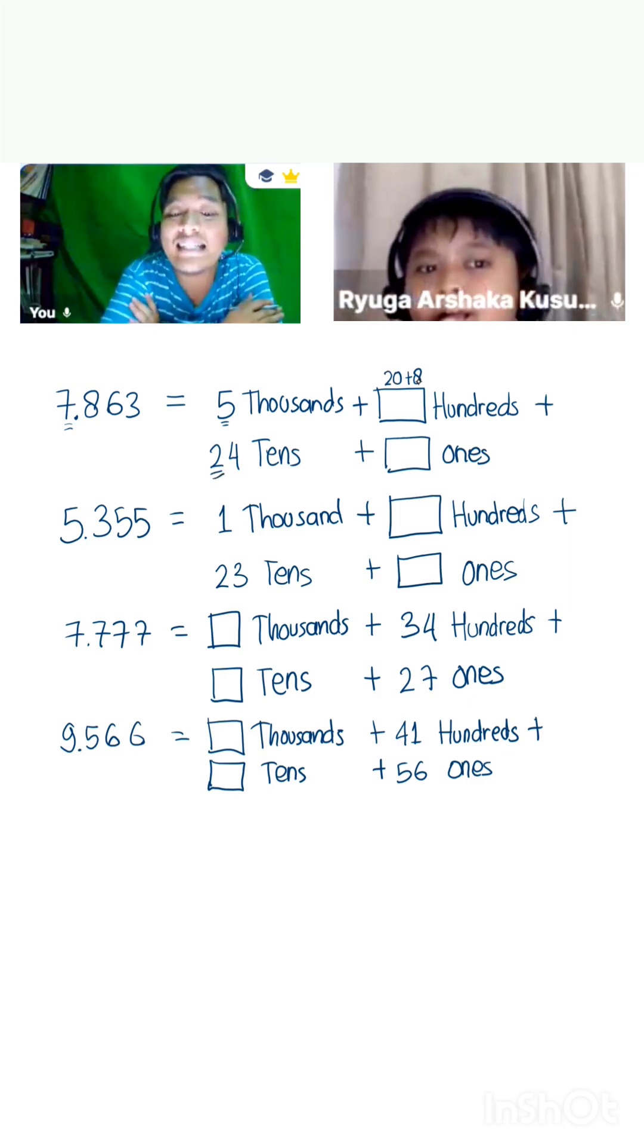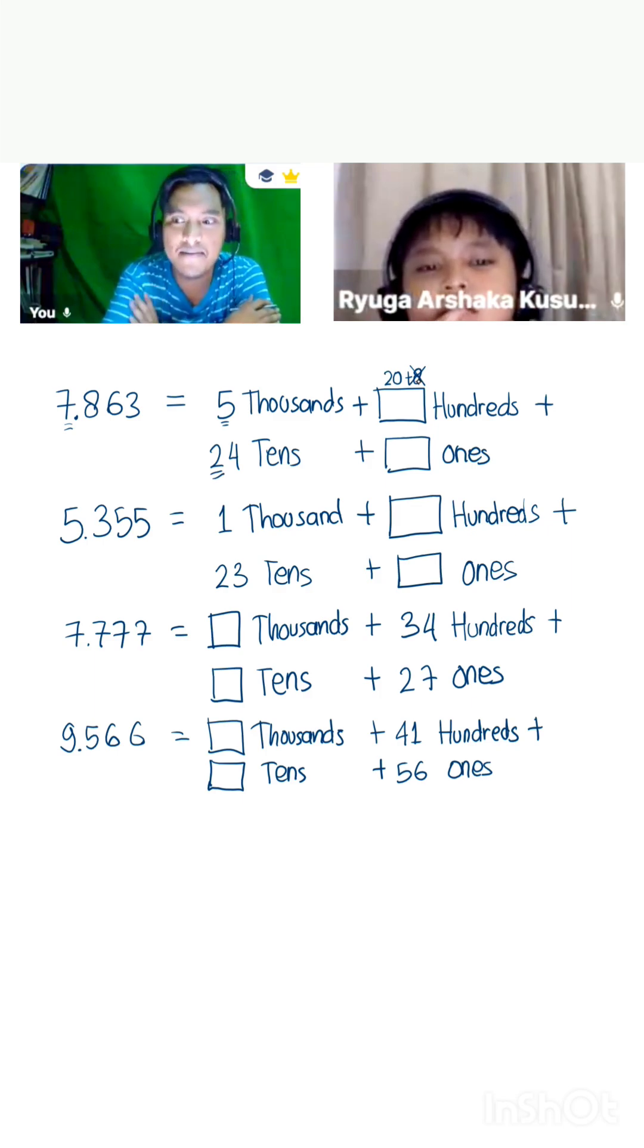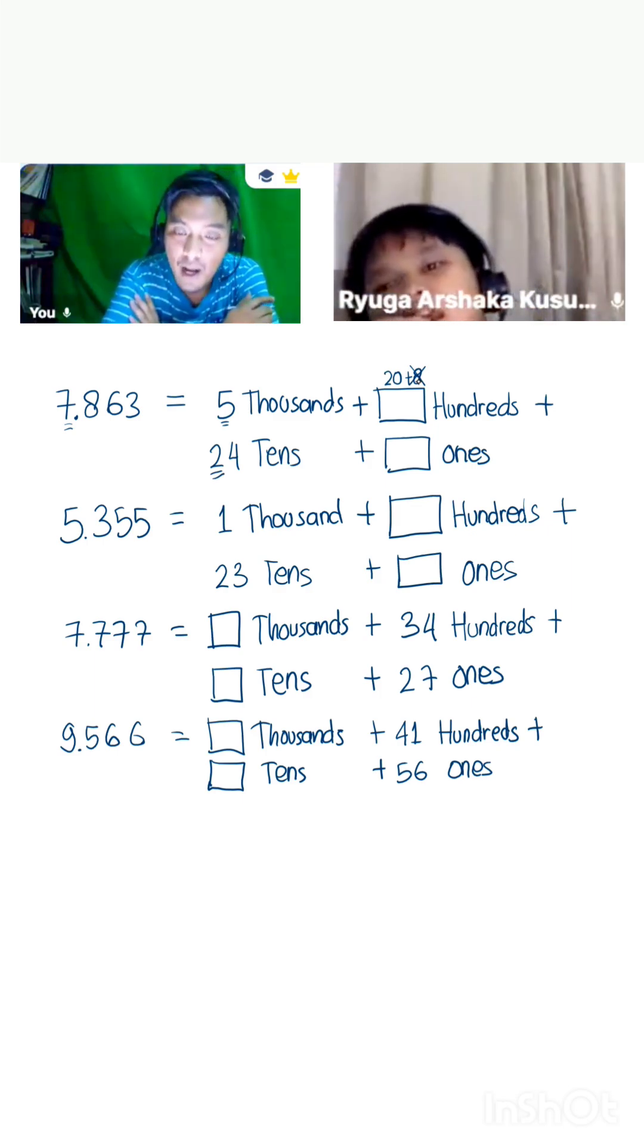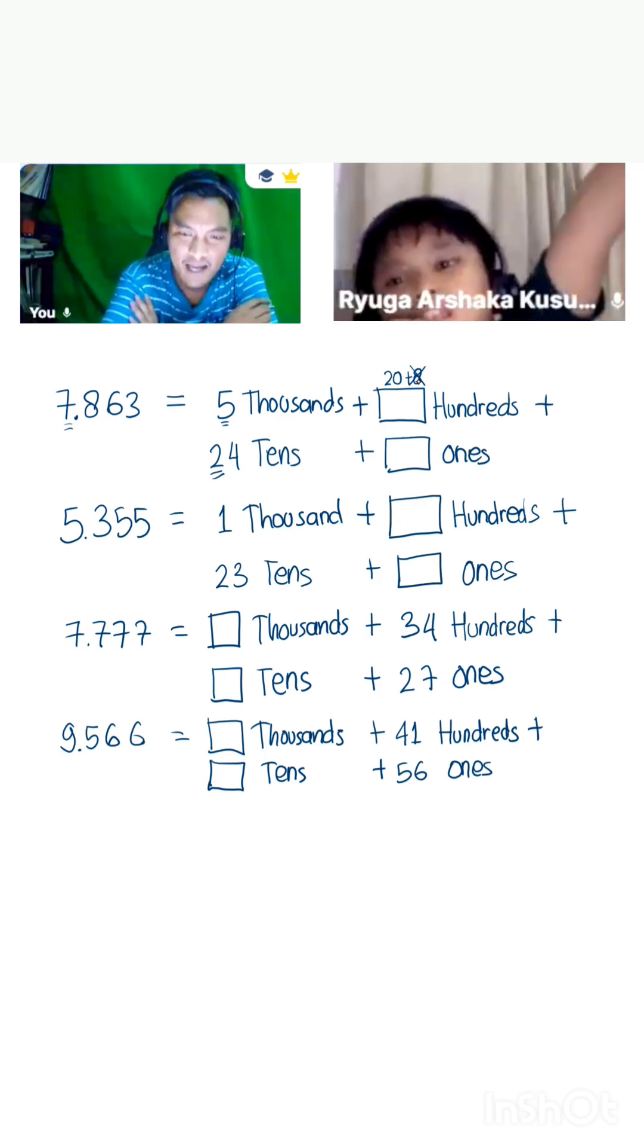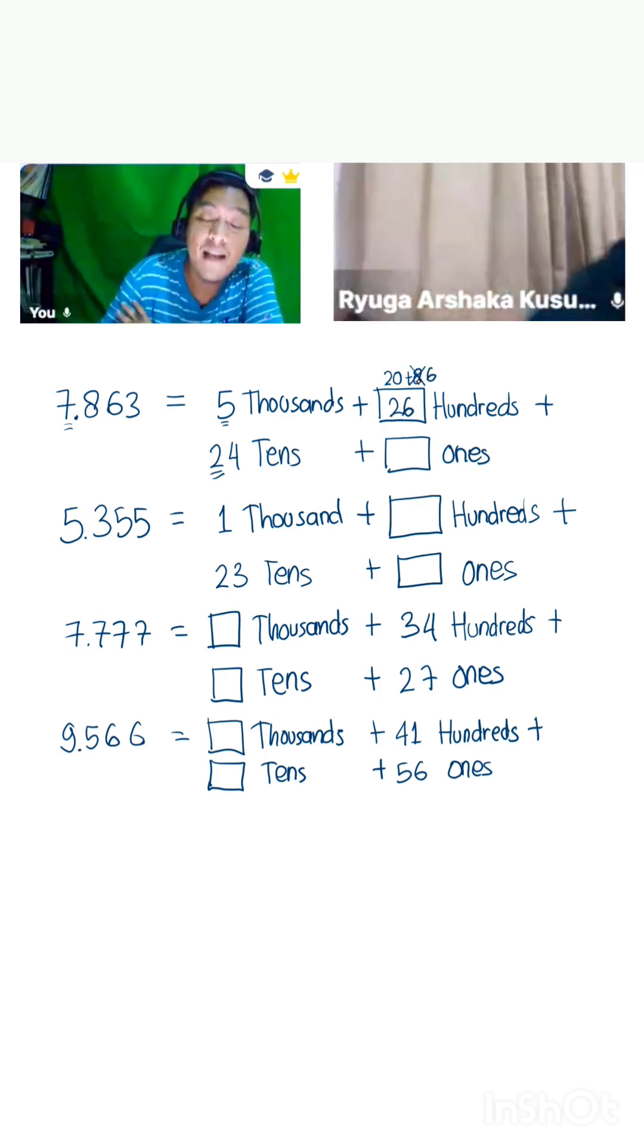20 tens there. It means we have to cancel the 8 here. It's supposed to turn into what number? Three? No, eight minus two, what is that? Six. Yes, it's six. So it's 26. That's how we solve it.